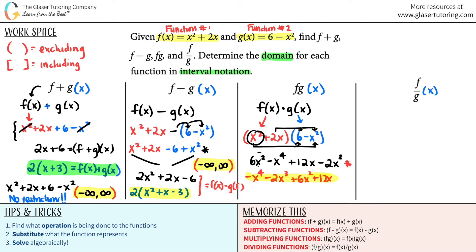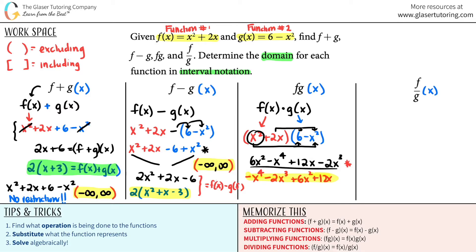For the domain, go back to the original. There are no exclusions — everything is in the numerator, there's no denominator to worry about. I can plug in any number, whether negative or positive, and get an actual number. The domain is negative infinity to positive infinity with parentheses.